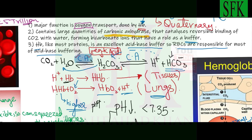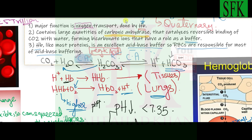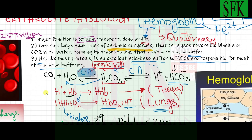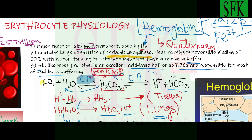The second role of red blood cells is acting as a buffer. Hemoglobin itself is the major buffer inside red blood cells. Like most proteins, it is an excellent acid-base buffer, and the RBCs are responsible for most of the acid-base buffering in the blood.